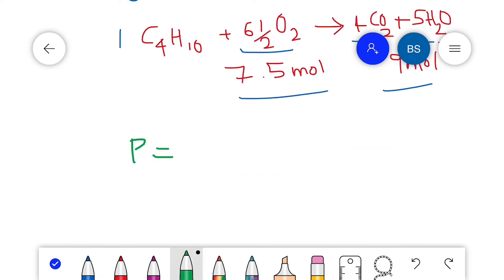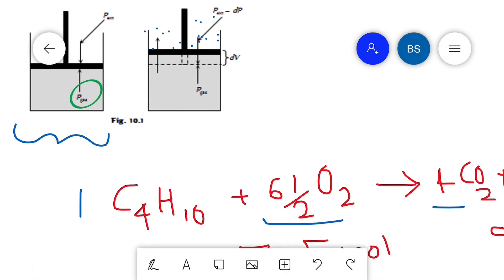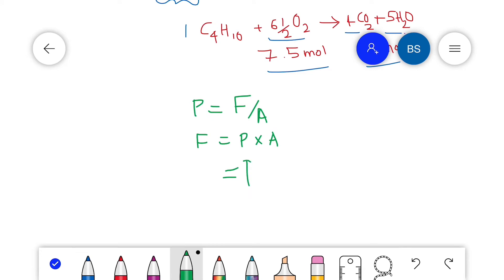We know that pressure is force per area, so force can be written as pressure times area. If you see, the pressure of gas is equal to the atmospheric pressure, that is P external. There is an opposite sign because the direction is opposite, so force can be written as negative P external times area.